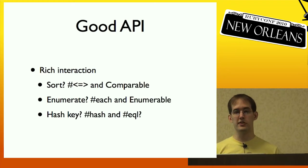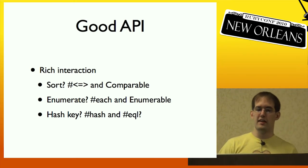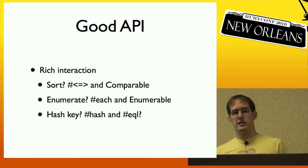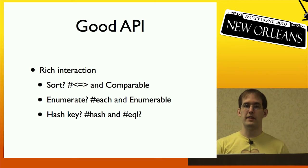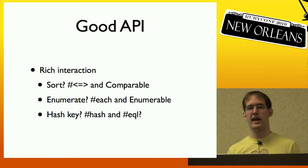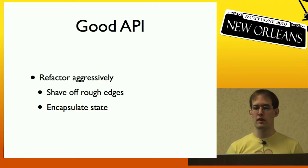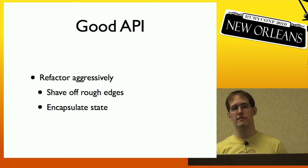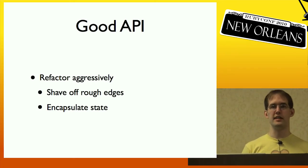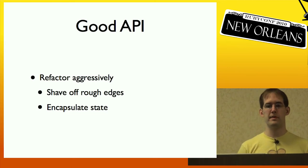There should be rich interaction amongst your objects. If you're going to want to sort your objects, add spaceship and Comparable. If you're going to enumerate your objects, provide each and Enumerable. If you're going to use your objects as a hash key, provide the hash and eql? method. Refactor your classes aggressively — shave off any rough edges and encapsulate shared state down into one place. This makes your API easier to use.